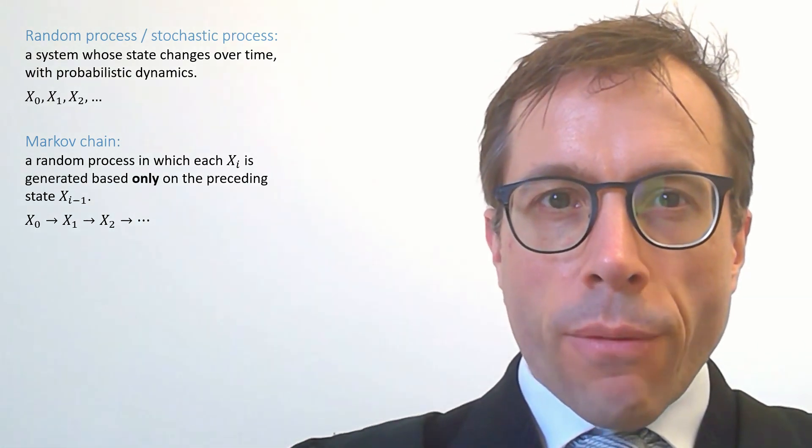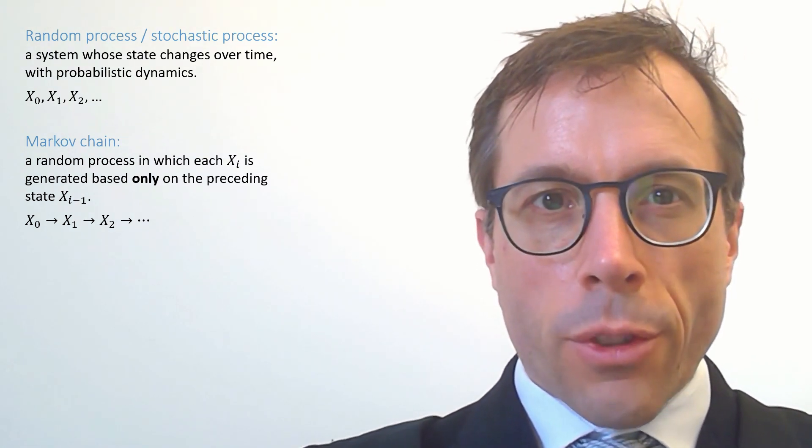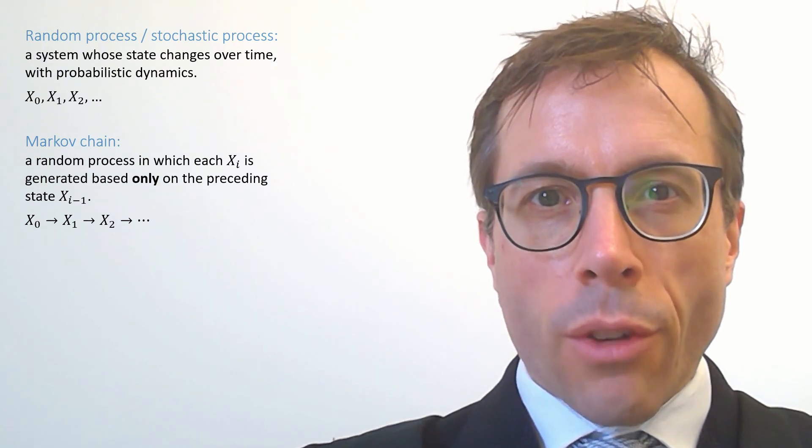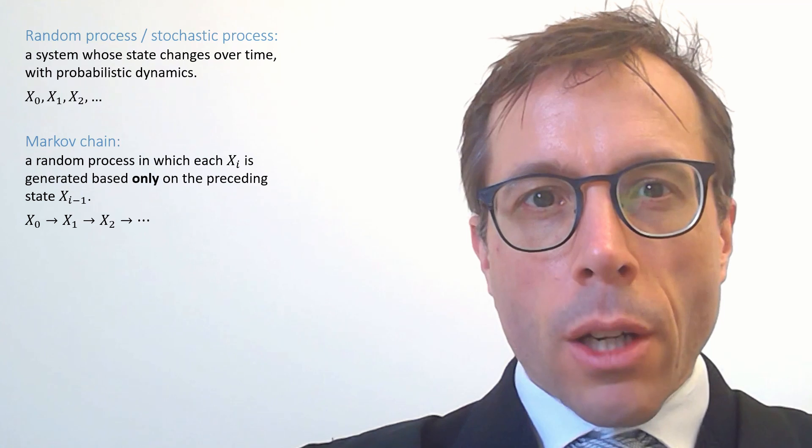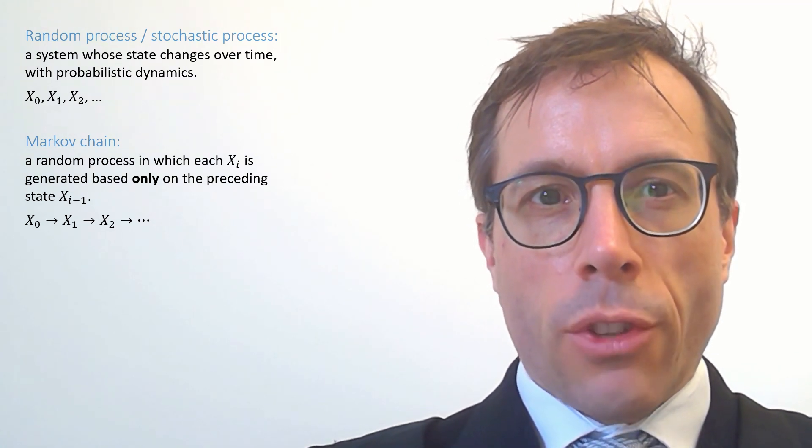Basically, whenever physicists might reach for a differential equation to model some sort of system that's changing over time, probabilists reach for random processes, and very often the first type of model they try is a Markov chain in which each state is generated based purely on the preceding state.